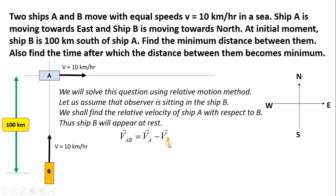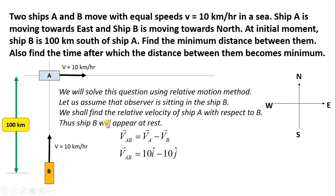The formula to calculate relative velocity is: velocity of A with respect to B equals velocity of A minus velocity of B — this is vector subtraction. From the figure, velocity of A is along the x-direction, so we write 10i-cap, and velocity of B is along the y-axis, so it is 10j-cap. Therefore, the relative velocity of ship A with respect to B equals 10i-cap minus 10j-cap, and this is the resultant relative velocity.